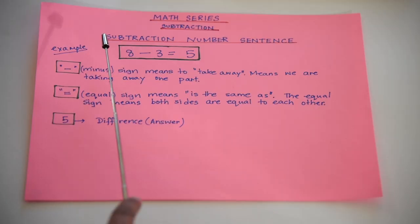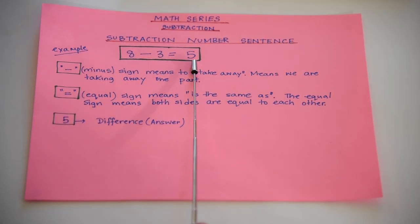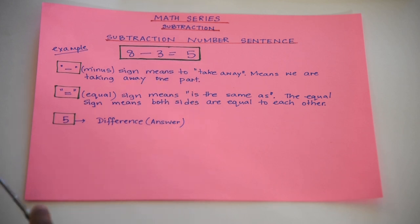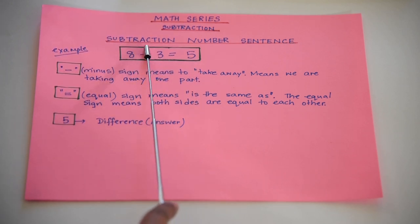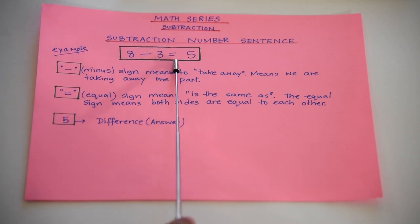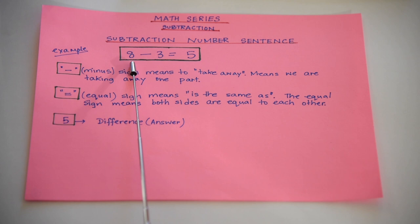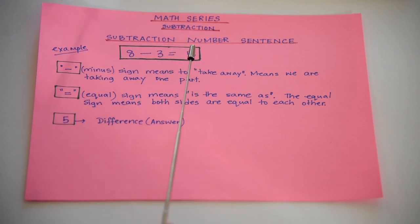Let's learn about the subtraction number sentence. The subtraction number sentence is eight minus three equals five. The minus sign means to take away things. The equal sign means both sides are the same. And the five is the difference, or the answer.